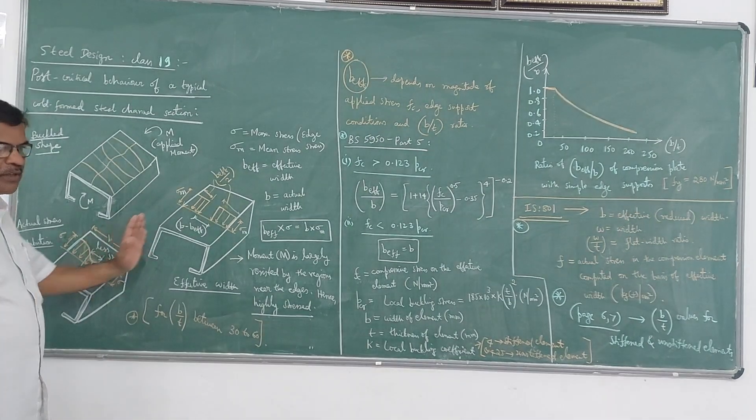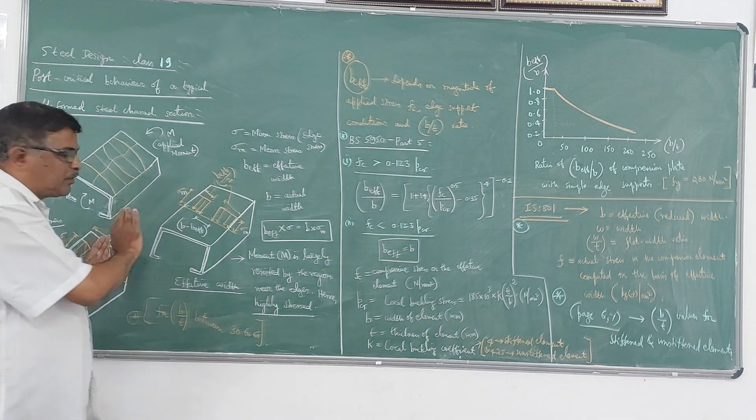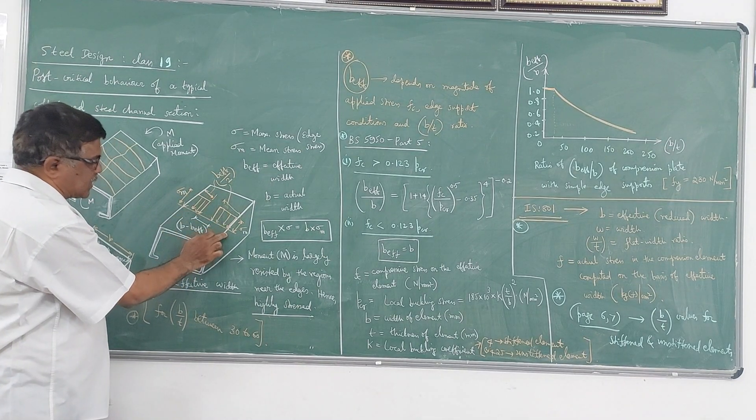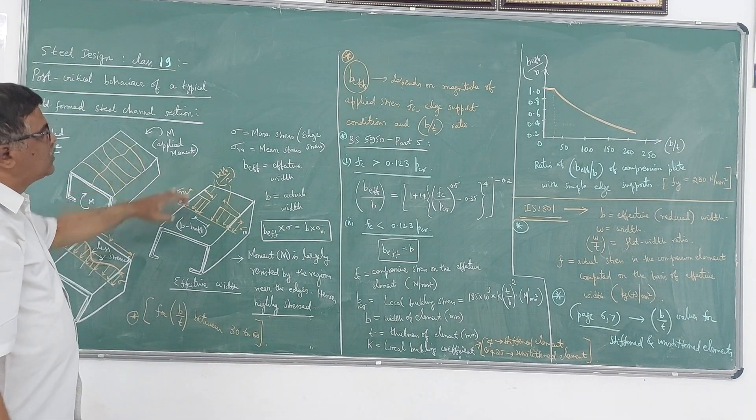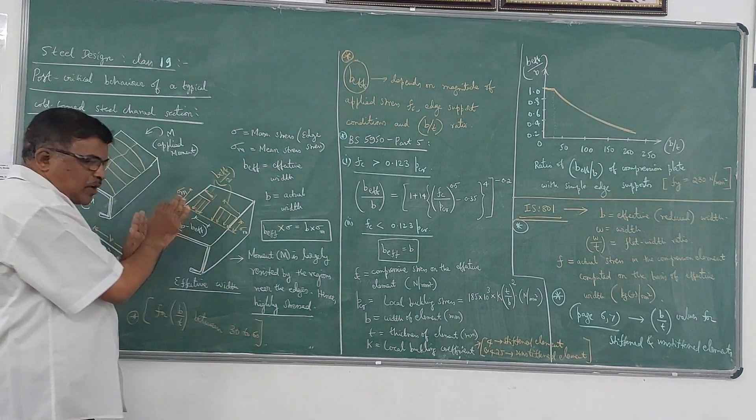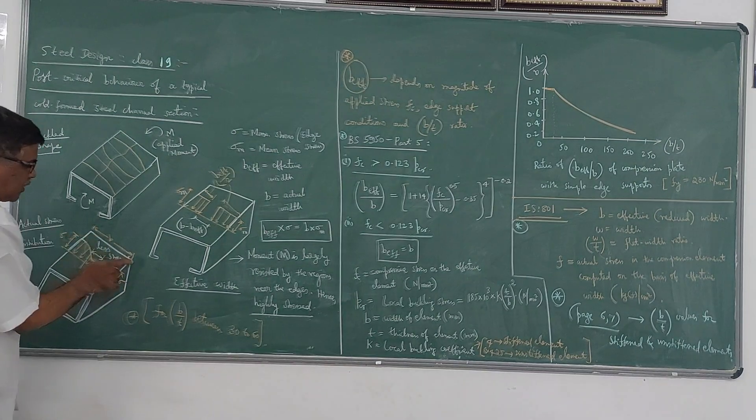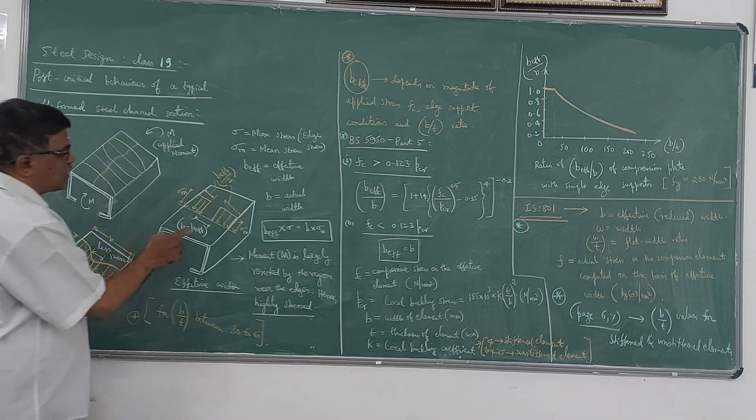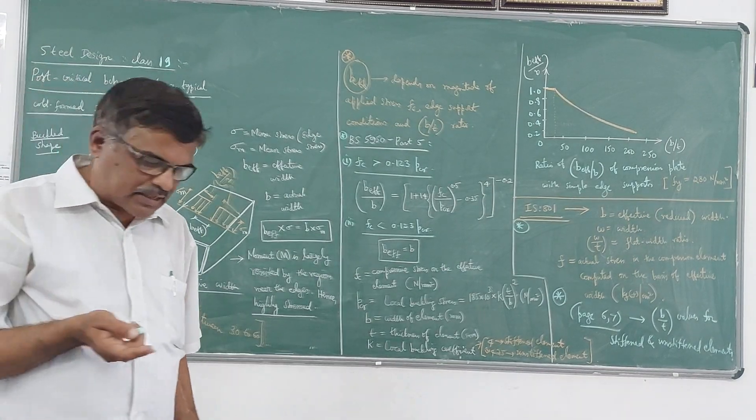So if I take this as a stressed section, you can always have a uniform stress distribution equal at uniform stress distribution something like this, which I take as the uniform stress as sigma M - that is the mean stress. Mean stress which is assumed to act over an effective width. So here B is the actual width of that channel section, whereas B_eff is the effective width of the channel section.